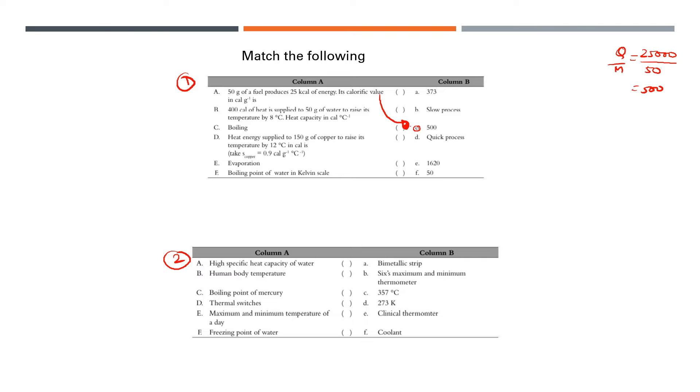Four hundred calories of heat is supplied to 50 grams of water to raise its temperature by 8 degrees. Heat capacity in calories per centigrade. The formula is C equals Q divided by delta T in temperature. That is 400 by 8, which will come to 50. So B will be F.